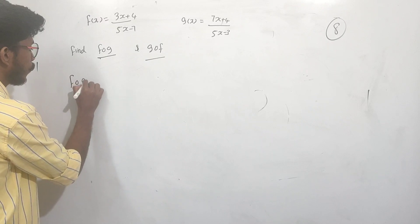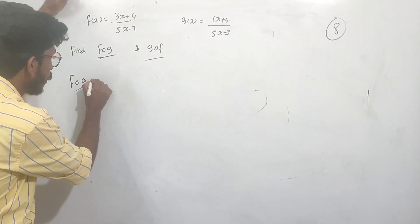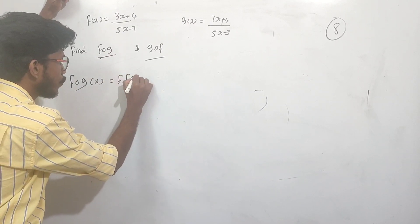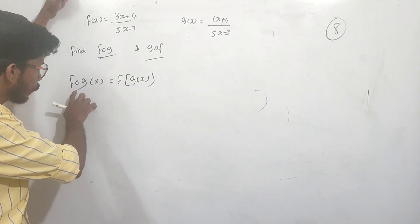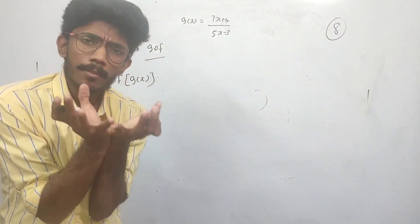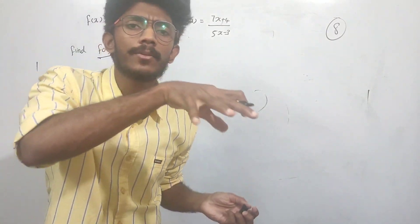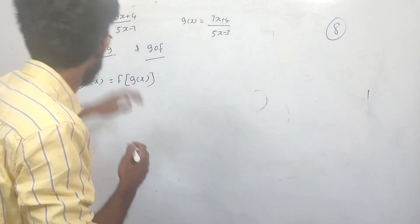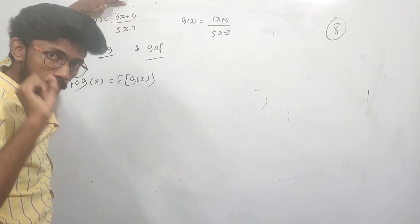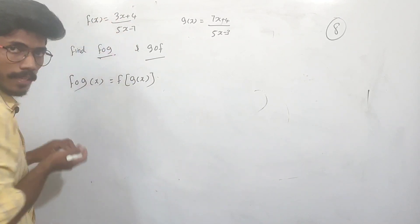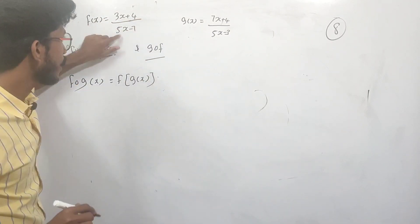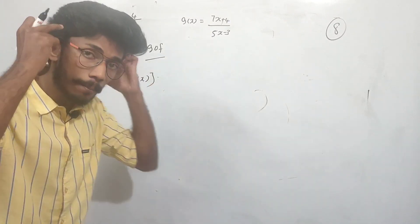The function f∘g means: what is f of g of x? You apply g first, then apply f to the result. This composite function has a specific nature.